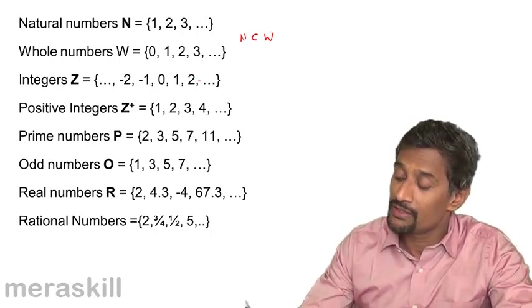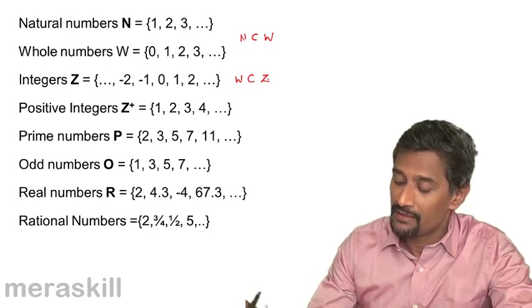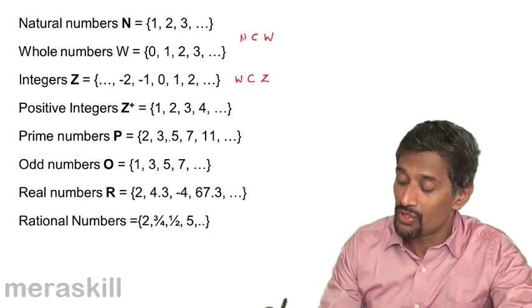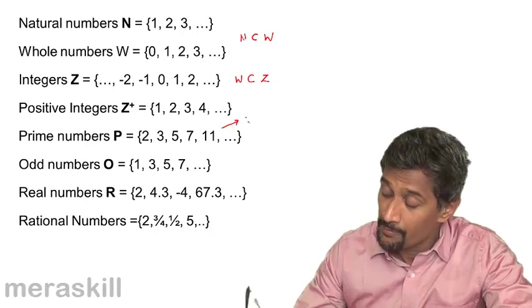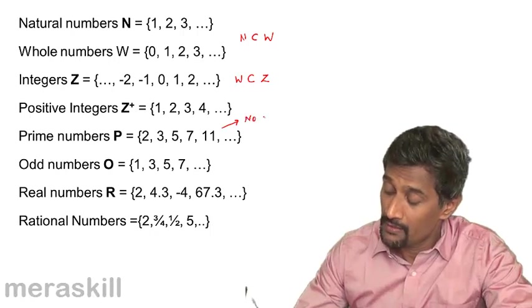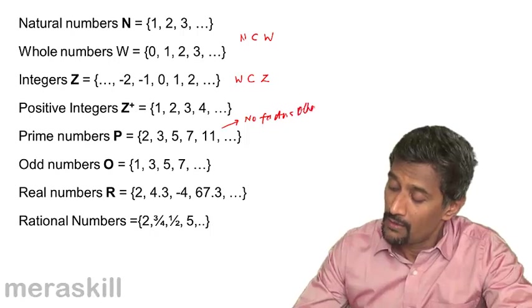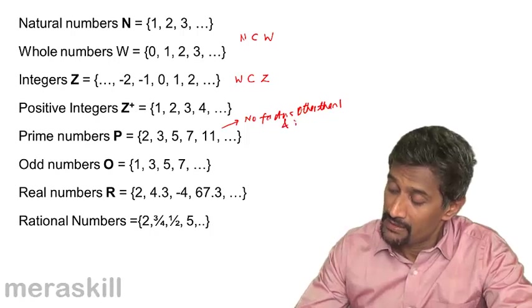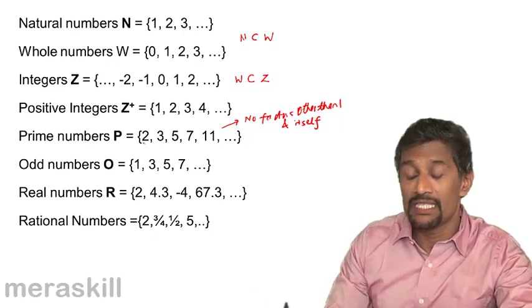Integers Z = {..., -2, -1, 0, 1, 2, 3, ...}, so you find that W is a subset of Z. Positive integers Z+ = {1, 2, 3, 4, ...}. Prime numbers P = {2, 3, 5, 7, 11, ...} are all those numbers which have no factors other than 1 and itself.